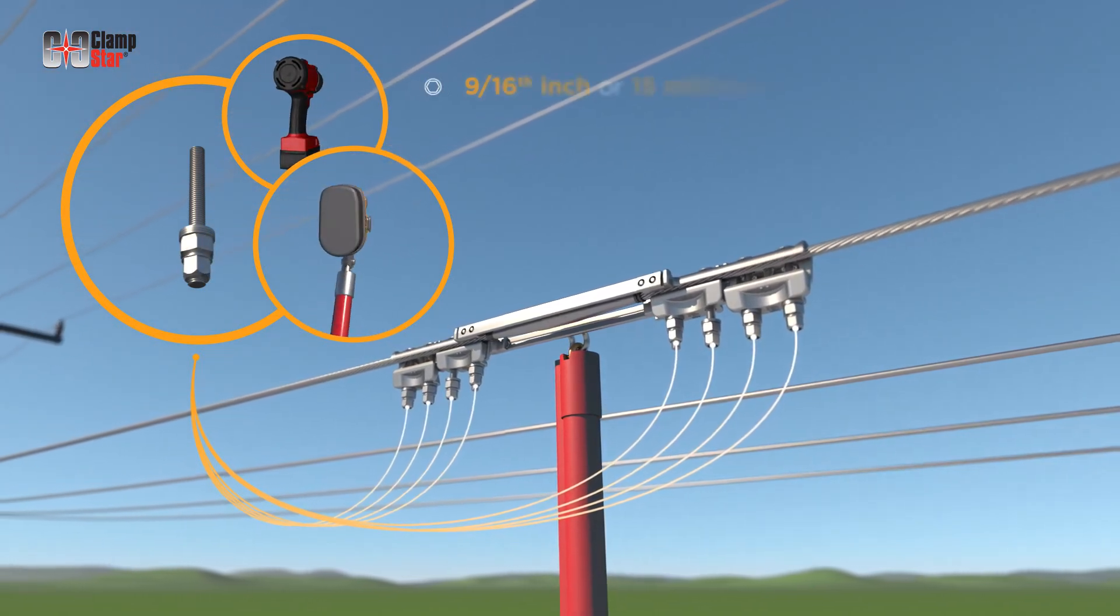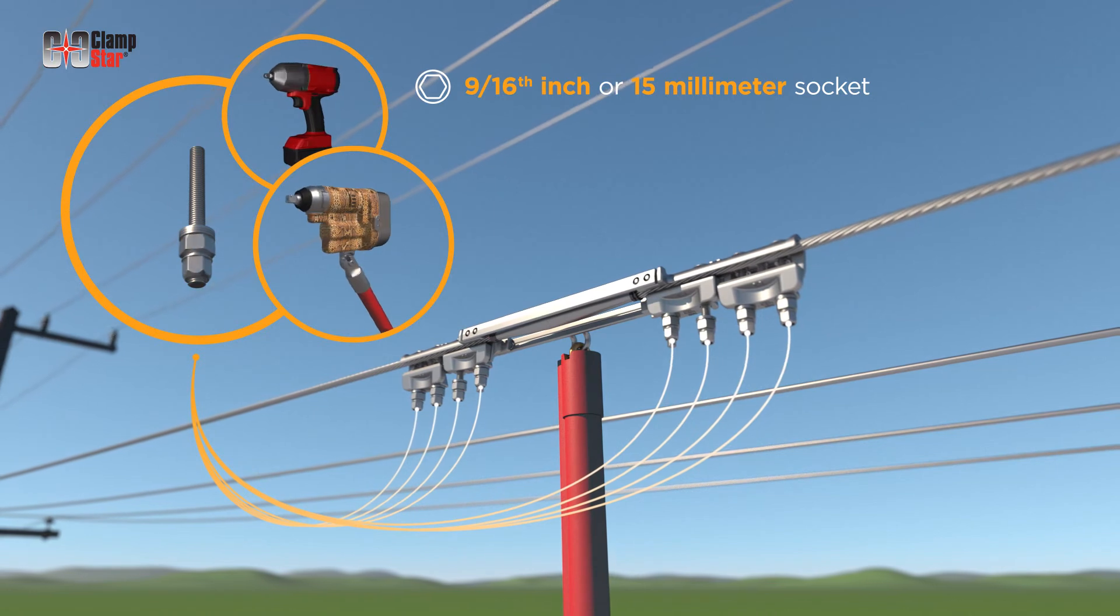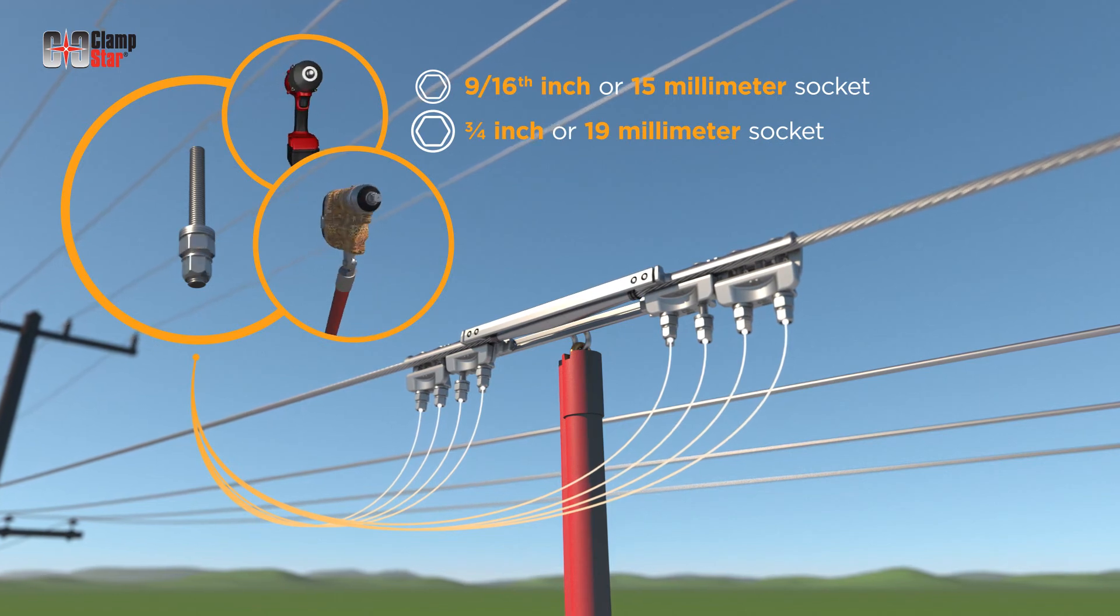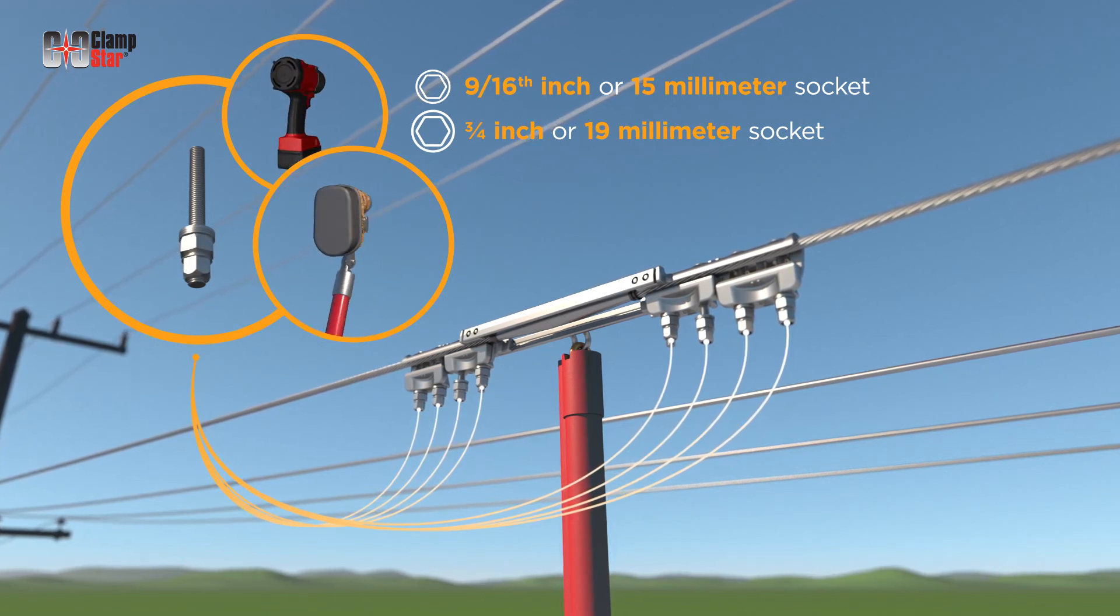The nuts may be tightened with a 9/16 inch or 15 millimeter socket for the smallest ClampStar unit, number 0325, or 3/4 inch or 19 millimeter socket for the larger ClampStar units.